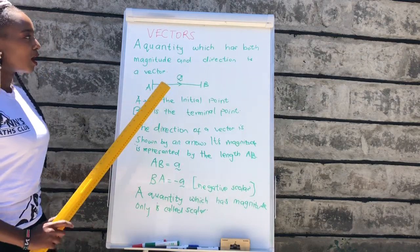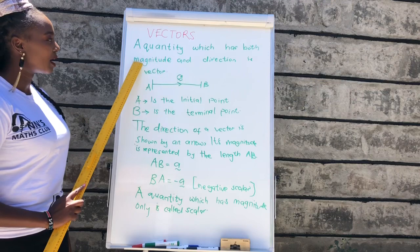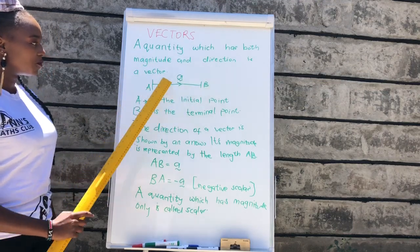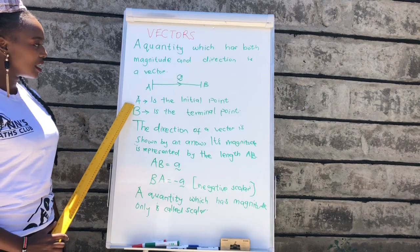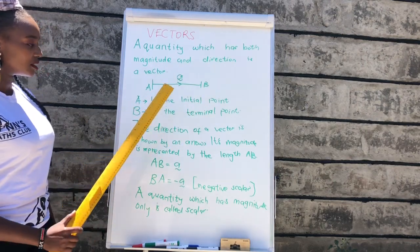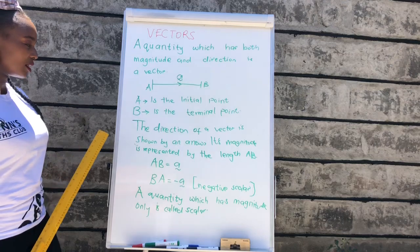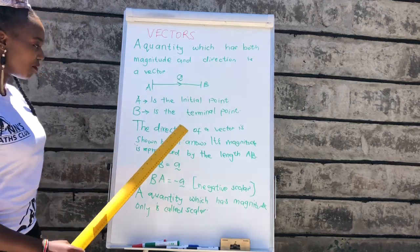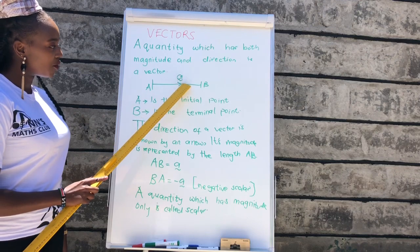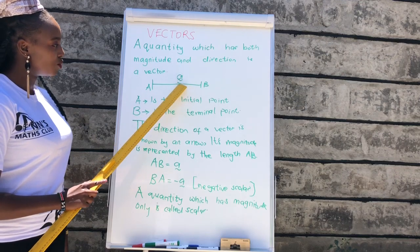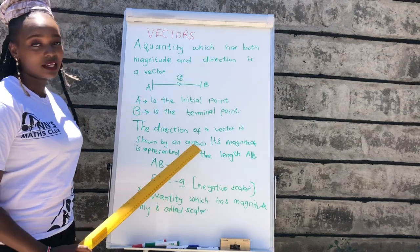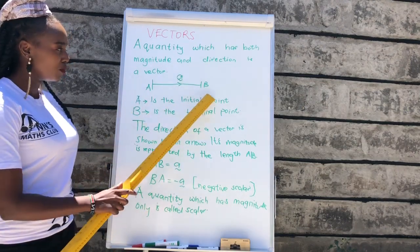A quantity which has both magnitude and direction is called a vector. And as you can see from this figure, we know that A is the initial point and B is the terminal point. The direction of a vector is shown by an arrow. The arrow tends to go towards B and its magnitude is represented by the length from A to B.